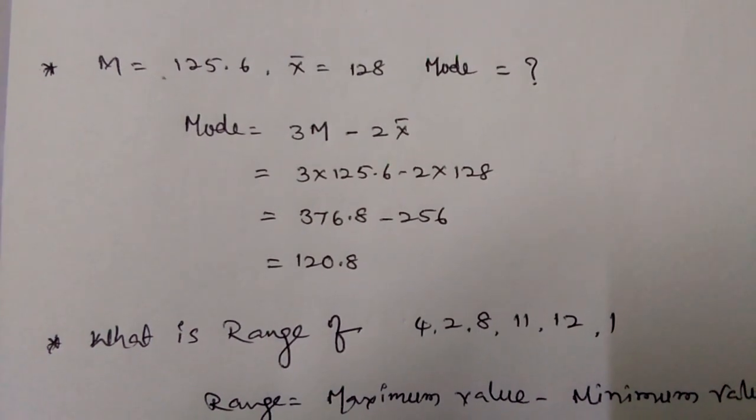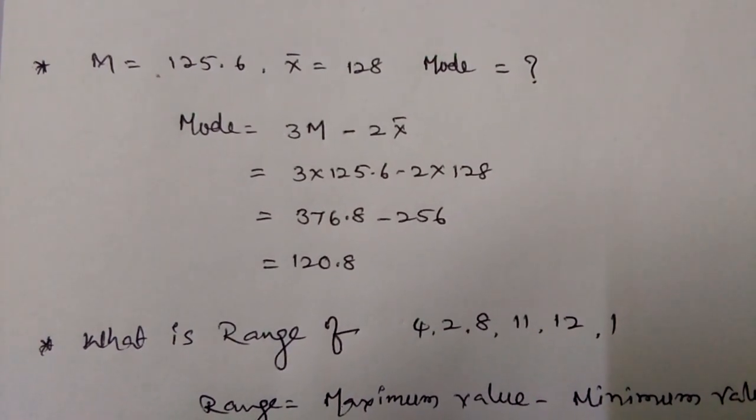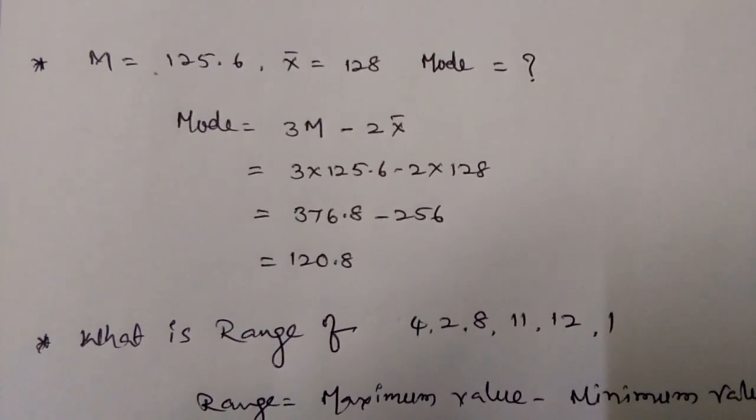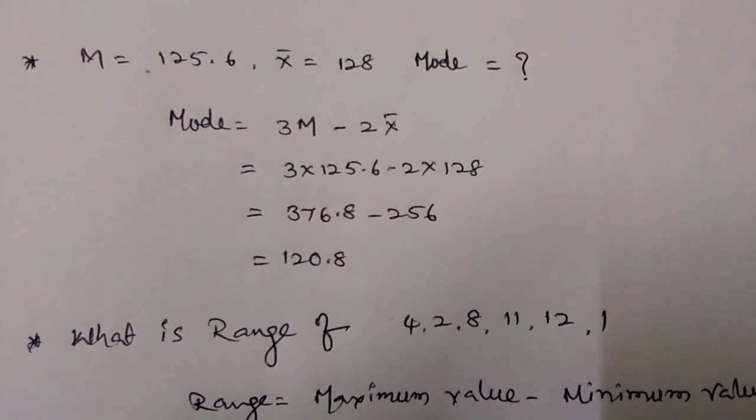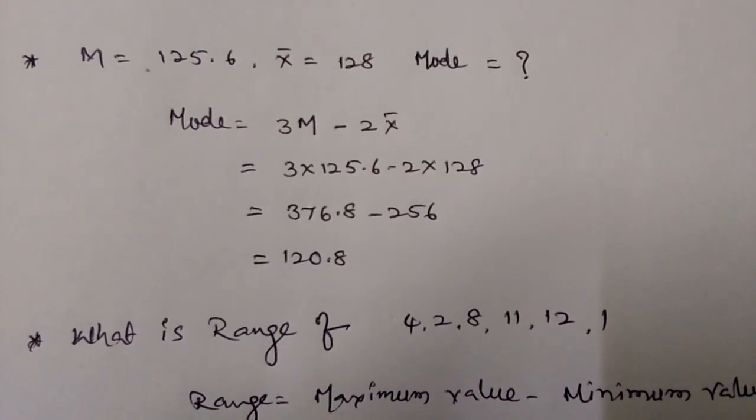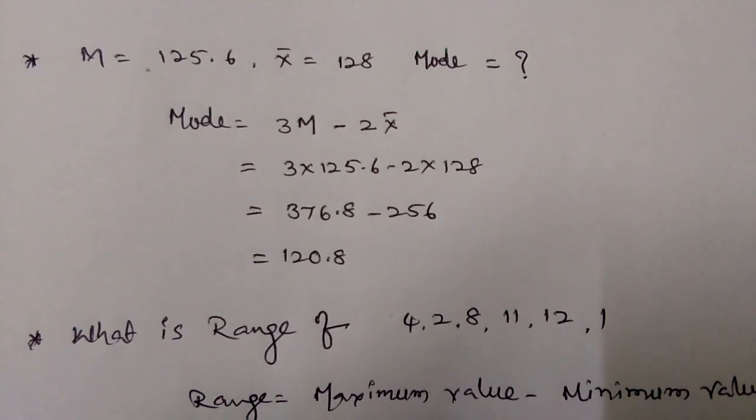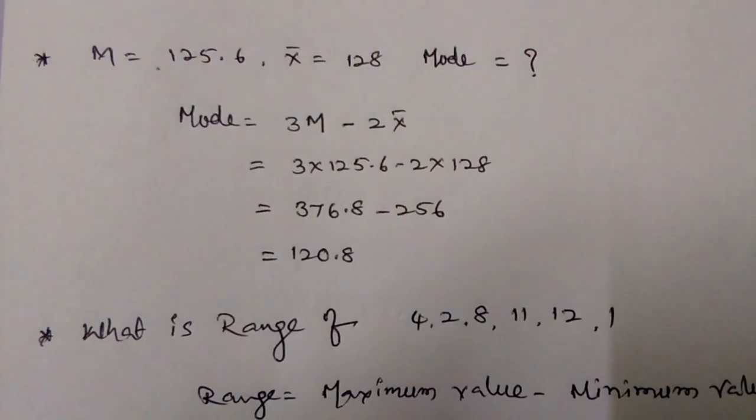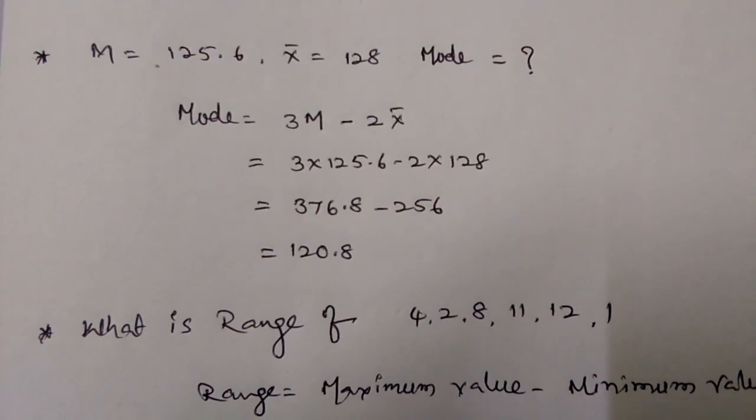So here mode equals 3 median minus 2 x bar, then 3 times 125.6 minus 2 times 128, that equals 376.8 minus 256, so mode equals 120.8.